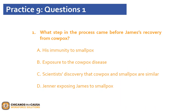We're almost there, everybody. Let's go ahead and answer question one. What step in the process came before James's recovery from cow pots? A, his immunity to small pots; B, exposure to the cow pots disease; C, scientists' theory that cow pots and small pots are similar; or D, Jenner exposing James to small pots? As seen in the text, James's recovery from cow pots followed his exposure to it. Thus, the correct answer is B — exposure to cow pots disease. Note that choice D refers to Jenner exposing James to small pots, not cow pots. Feel free to pause the video to complete and review questions two to five. Click play when you're ready to continue.